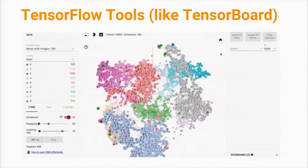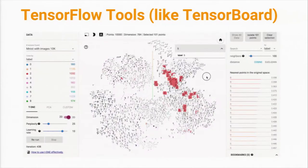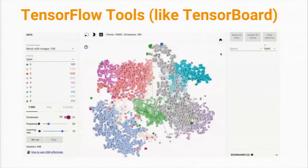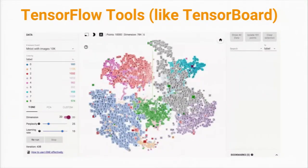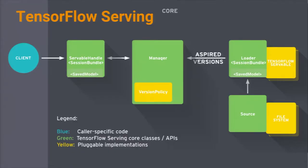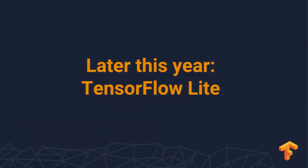Here's one of those tools — an embedding visualizer that takes MNIST, the set of handwritten digits, and shows how they've been clustered together by a simple machine learning model. There's also TensorFlow Serving, which helps you take a trained model and serve it at scale, manage versions, and detect regressions in accuracy over time. And later this year we'll be coming out with TensorFlow Lite, a lightweight version optimized for mobile and embedded devices.